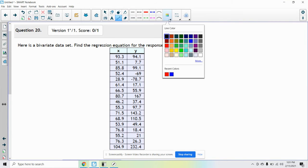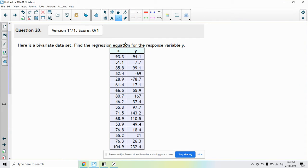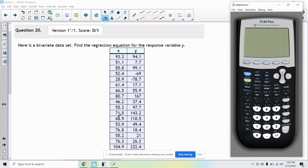Okay, so we have this question here. They give us a bunch of data and all they want us to do is plug all this data into L1 and L2 and find the linear regression. I'm going to pause the video while I enter because it's kind of a pain, but what you're going to do is put all the x values into L1 when you go to stat edit.